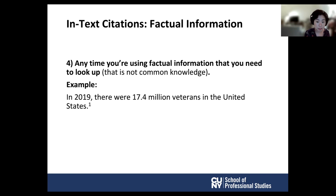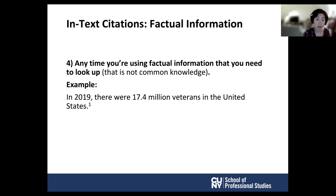The fourth situation where you would need an in-text citation is when you use factual information that isn't common knowledge. Things like 'there are 50 states in the US' don't need a citation. But if you mention a statistic you had to look up — for example, 'in 2019 there were 17.4 million veterans in the United States' — that is not common knowledge and you should provide a citation for where you got that information.